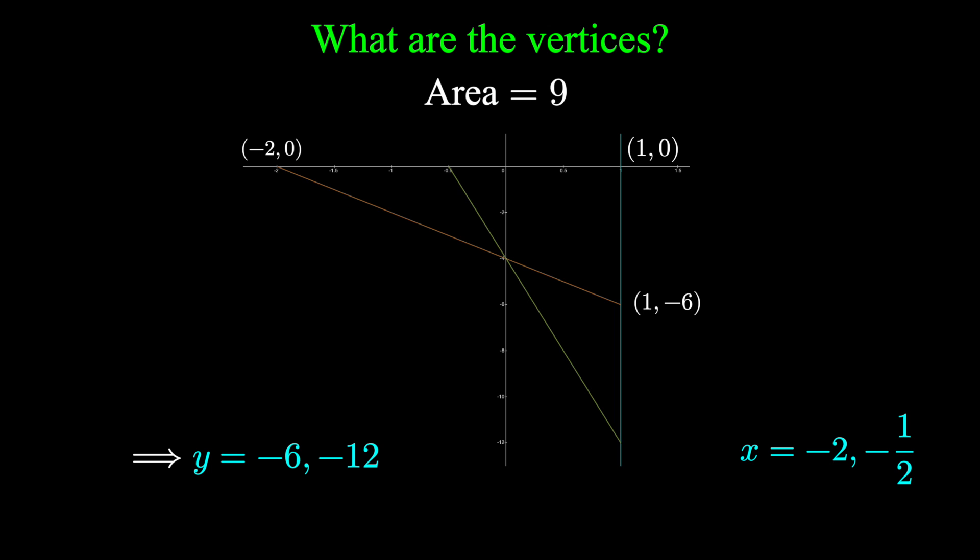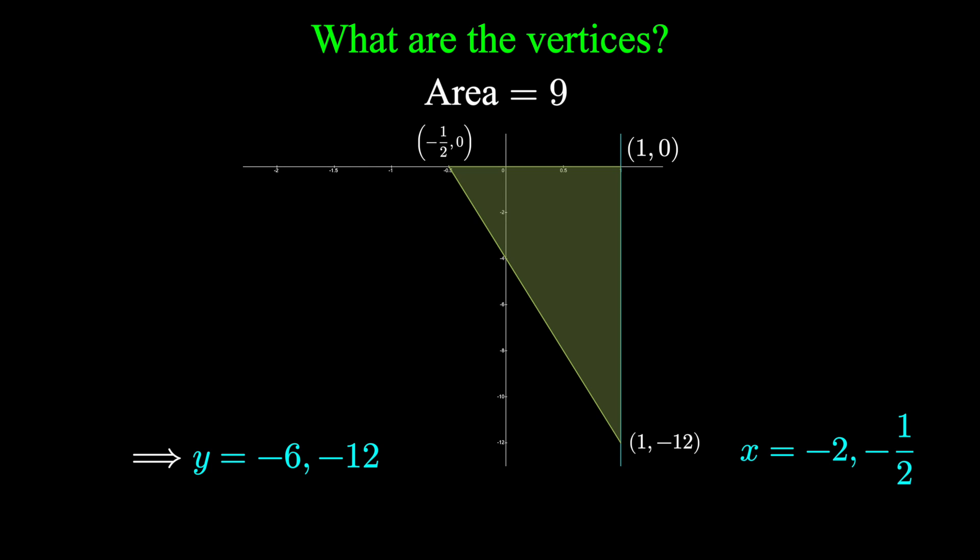And there's another triangle formed by x equals minus one half, 0; 1, 0; and 1, negative 12. Both of these triangles satisfy these conditions. Were you able to figure it out?